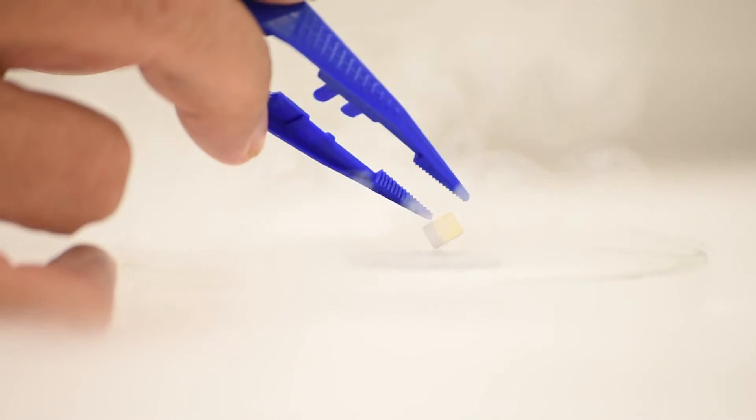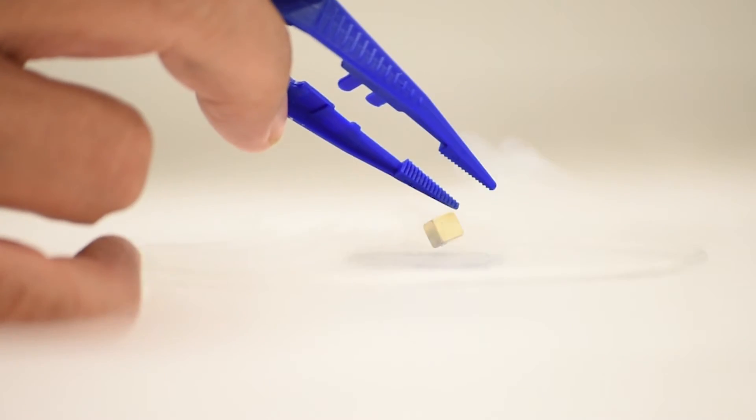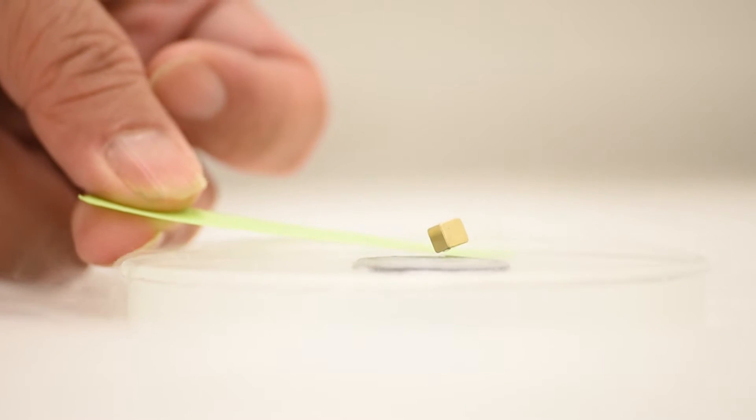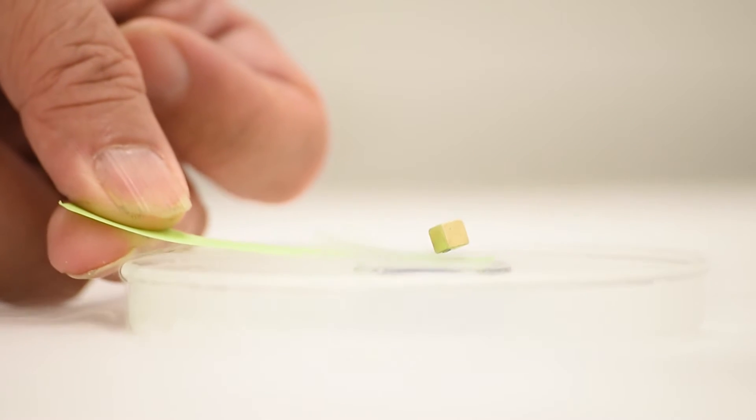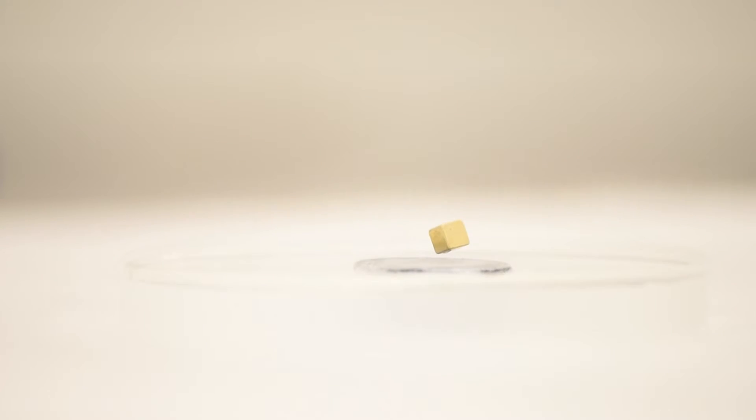And you can see this. And it is really levitated, not touching the superconductor. The only thing between the magnet and the superconductor is the magnetic field lines, and they will be expelled from the superconductor.